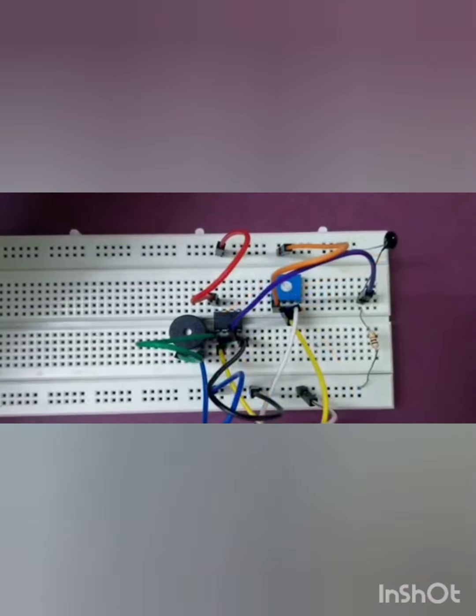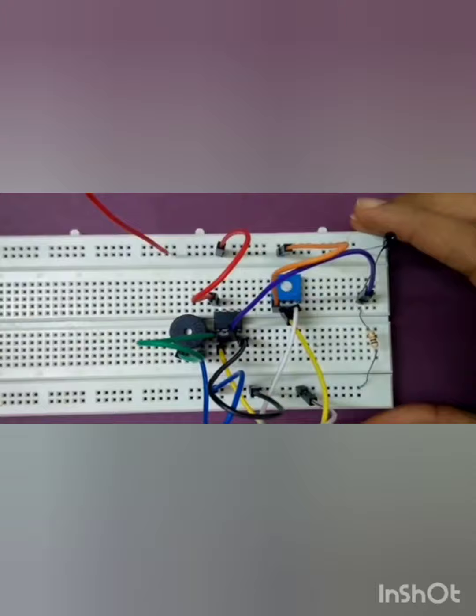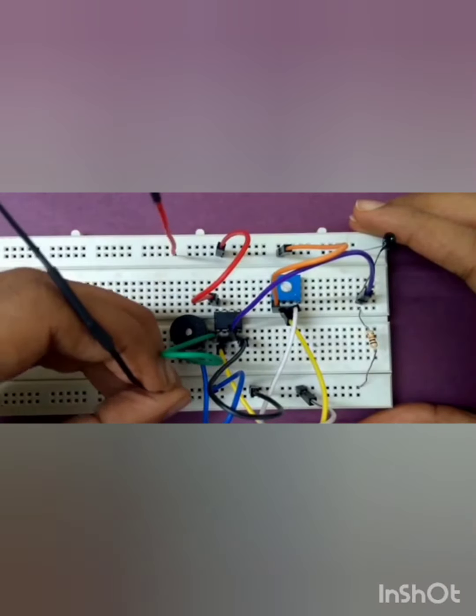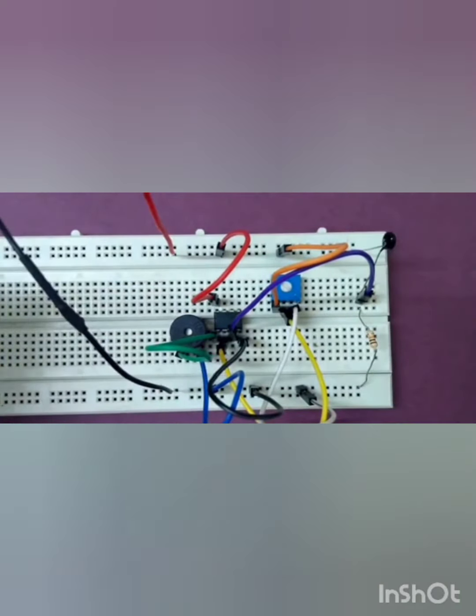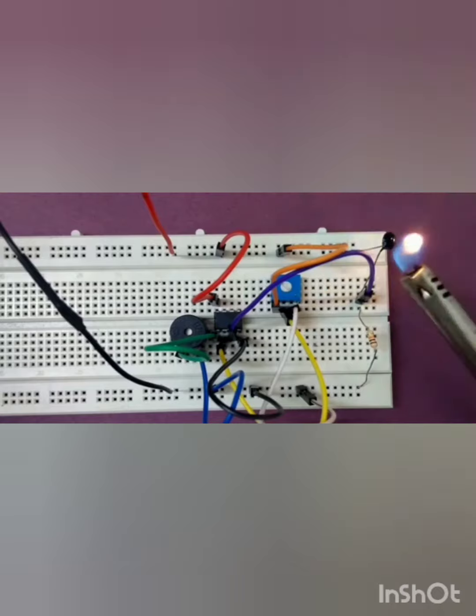We will now connect the 9V battery. When I bring a source of fire near the thermistor, the temperature increases so its resistance decreases because of which the buzzer is activated.